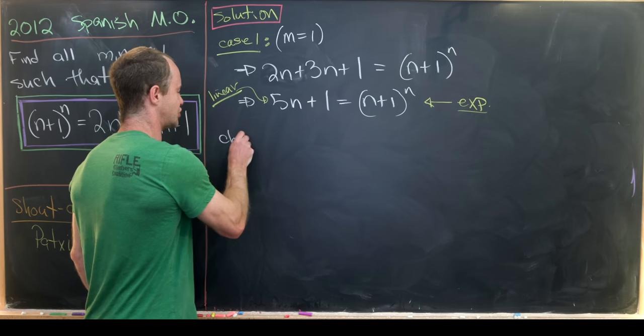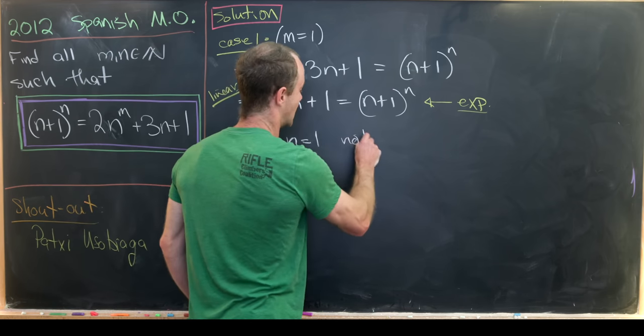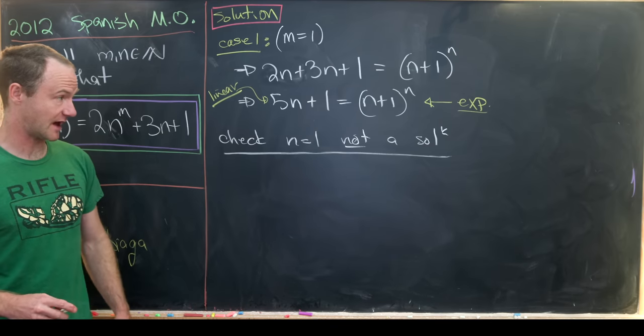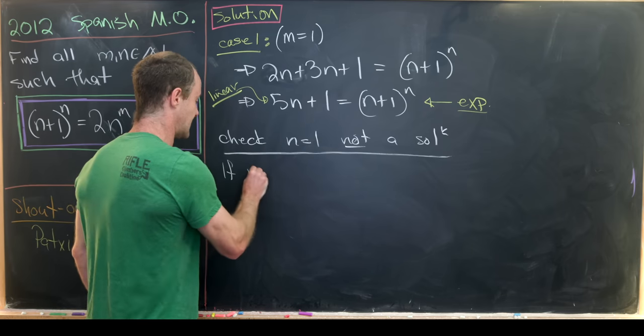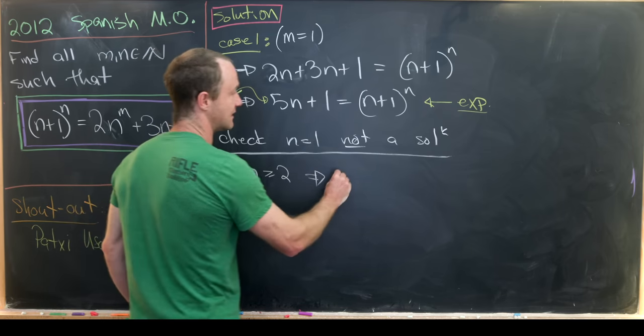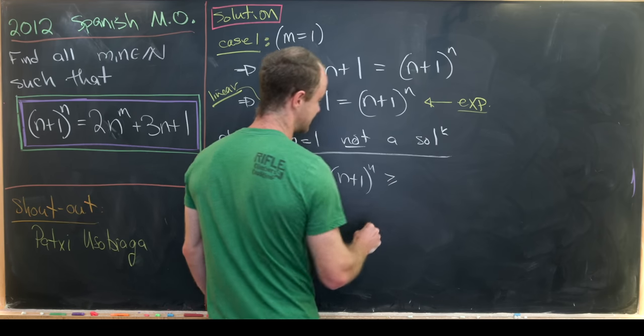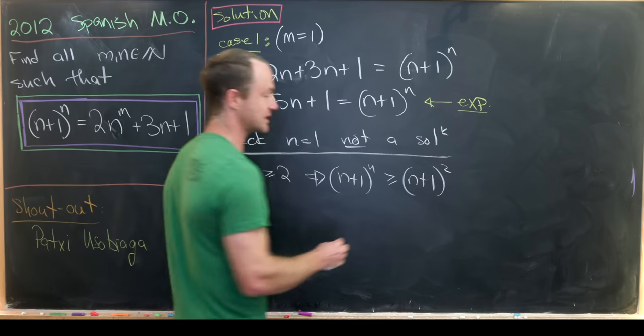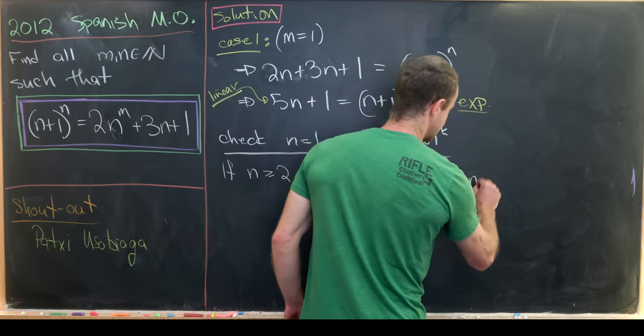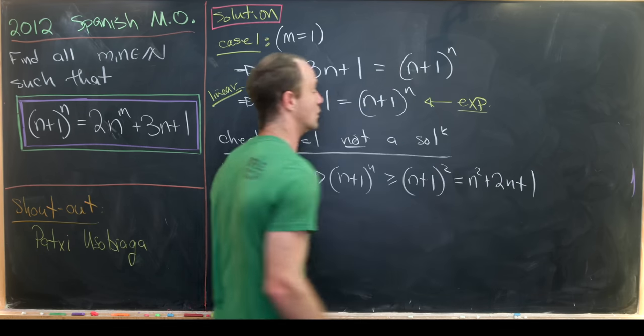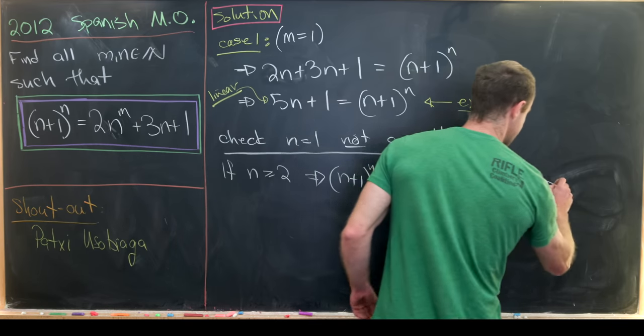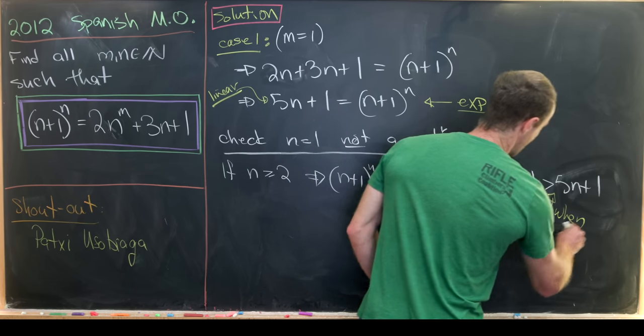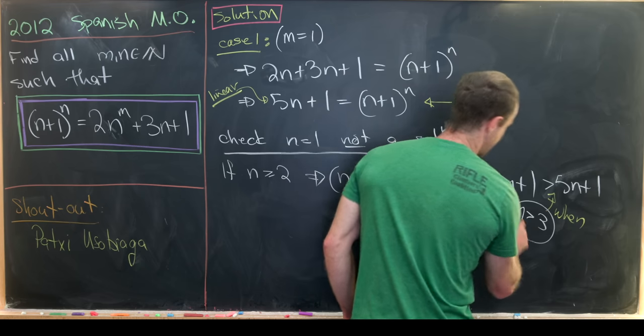Well, maybe we would first check that n equals 1 is not a solution. So that's pretty easy to check. I won't even worry about that. And then we'll check if n is bigger than or equal to 2, then that implies that (n+1)^n is bigger than or equal to (n+1)^2. But (n+1)^2 can be multiplied out, and that gives us n^2 + 2n + 1. But now let's notice that this is strictly bigger than 5n + 1. But not always, this is only when n is bigger than 3.